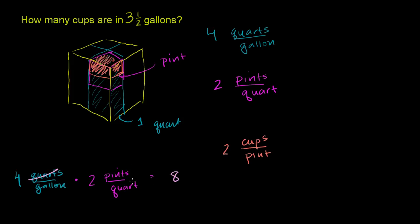This gives you 4 times 2 is equal to 8. And then the quarts cancel out. And you have 8 pints per gallon. And that makes complete sense, because we had 4 quarts in this gallon, and then each of those quarts have 2 pints in them. So 4 times 2. So 8 pints per gallon.